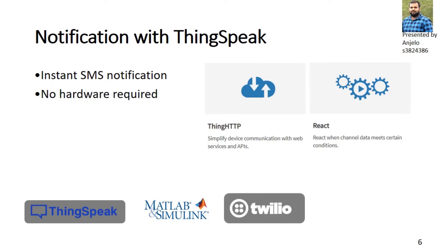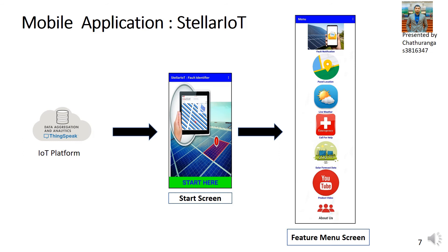Faults in the system will be instantly notified to the user via an SMS alert. With the help of a third-party website called Twilio, ThingSpeak can send SMS messages without any hardware implementation. Advanced features called ThingHTTP and ThingReact are used to send SMS alerts instantly to the user. ThingHTTP provides the API keys and configuration of the SMS, while the React function determines when to trigger the SMS alert by checking fault type data every time new data is inserted.